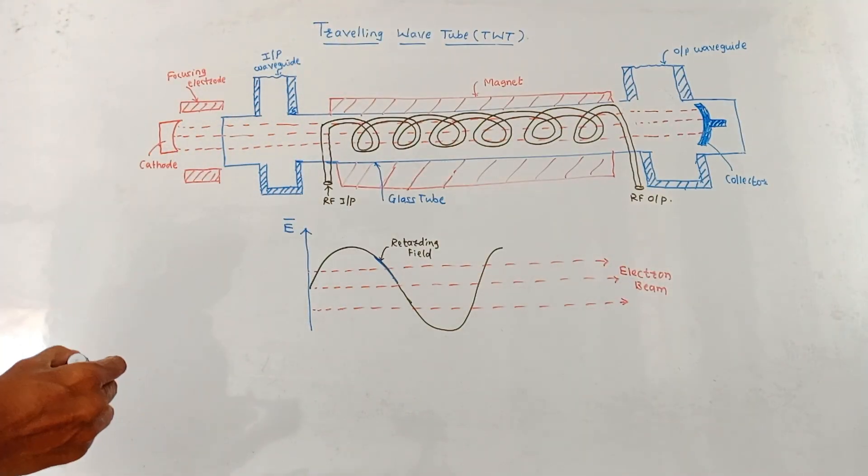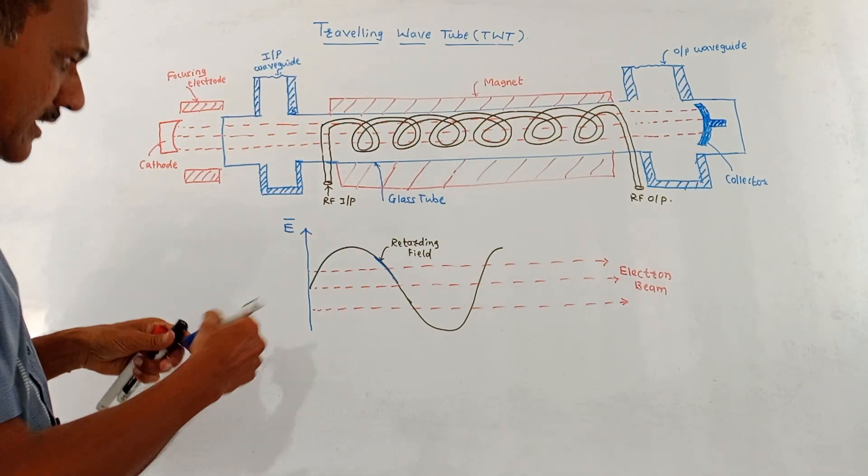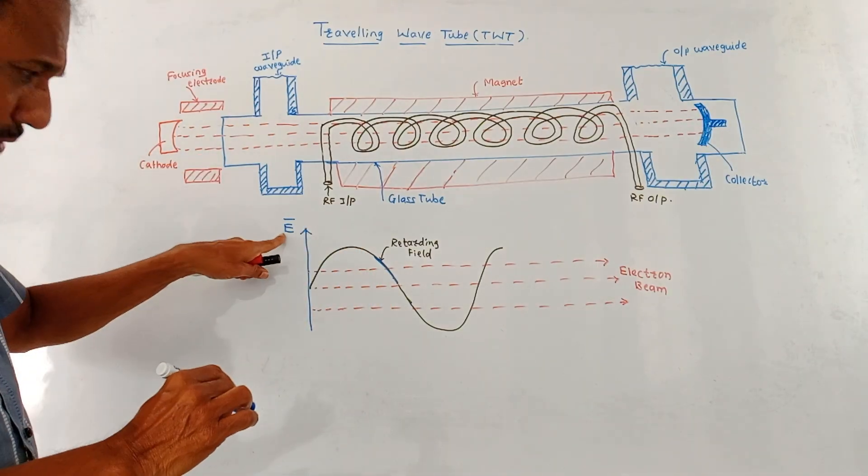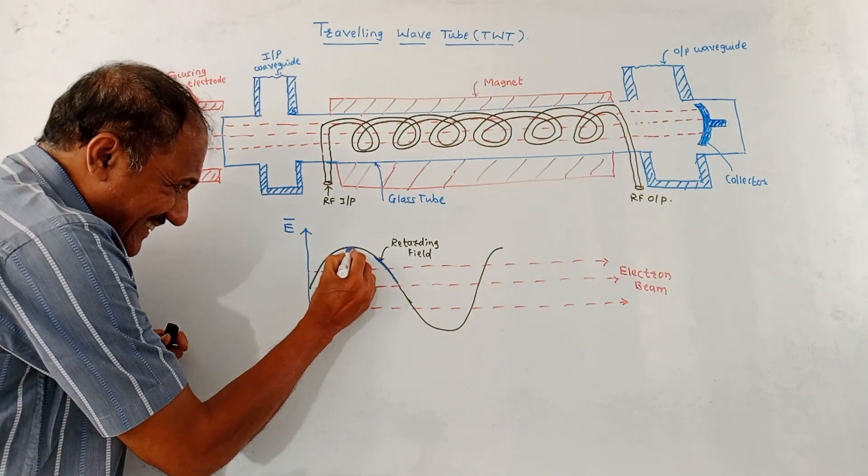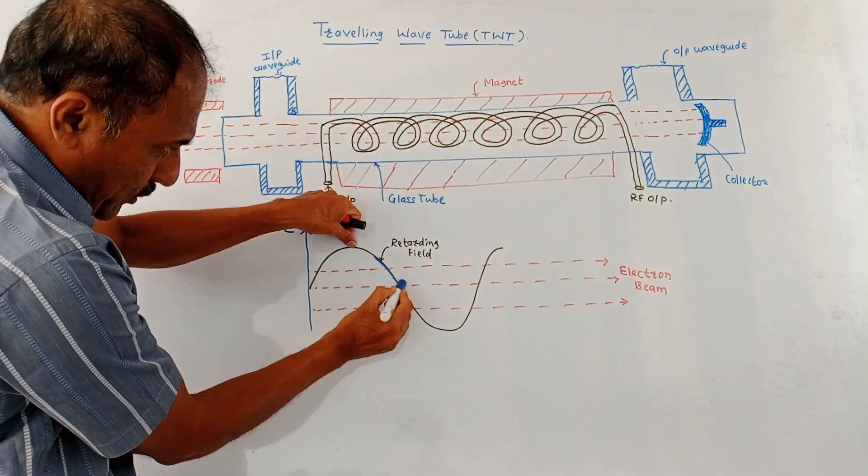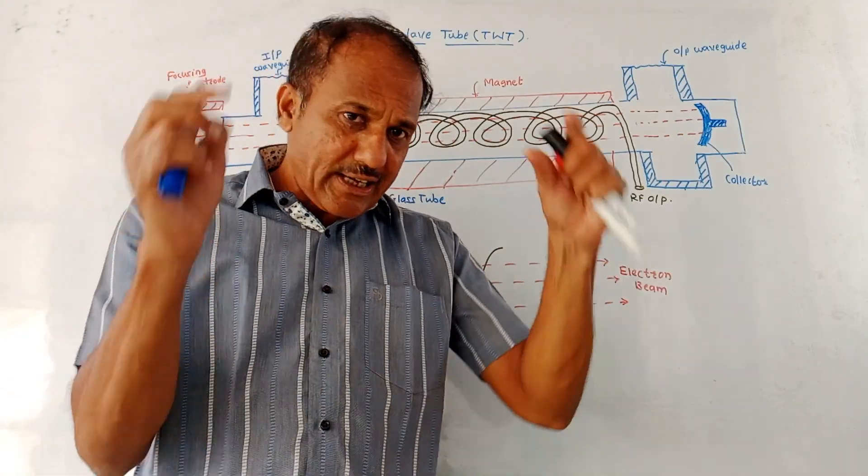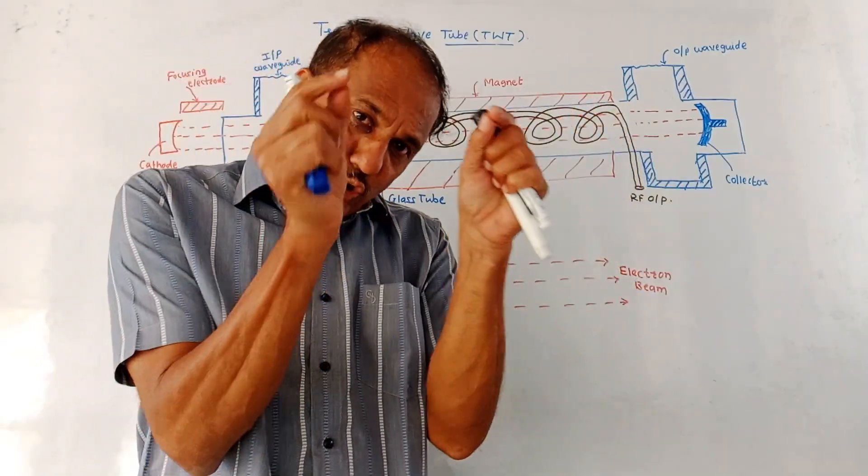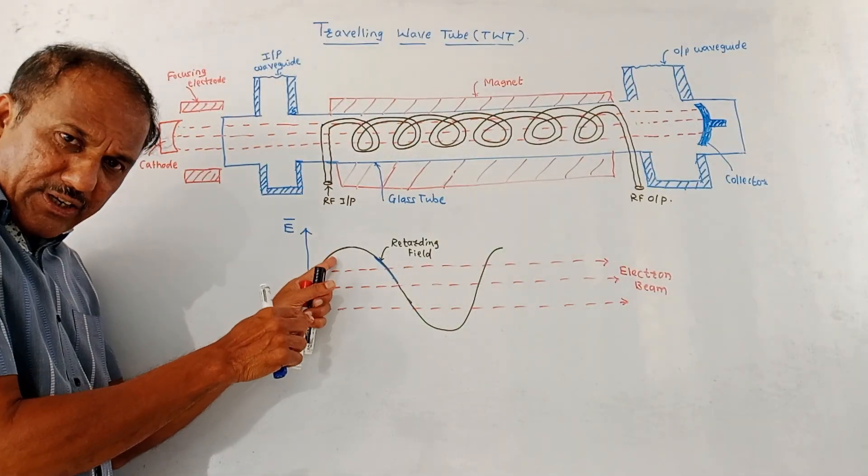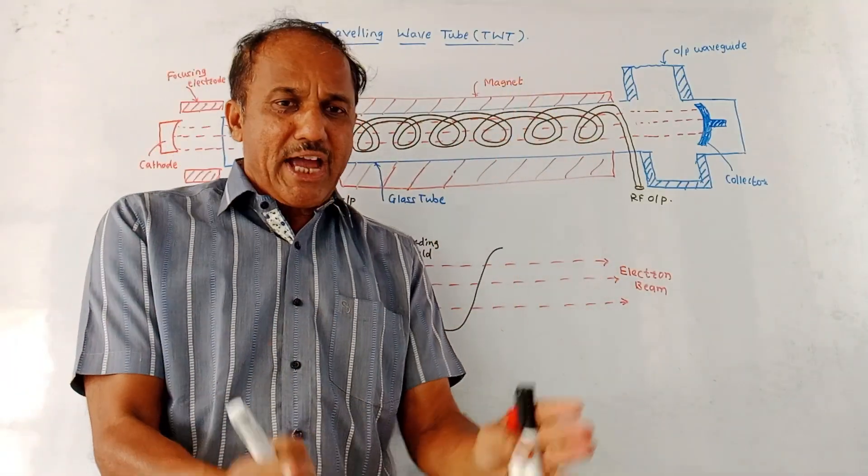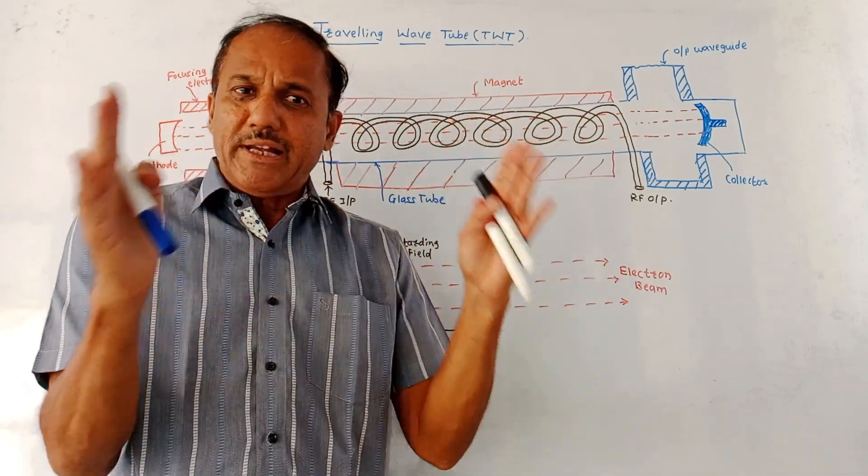Now how the working of this structure takes place. As we discussed, RF input signal is applied at one end of this helical structure. Consider this diagram. This shows the variation of electric field. So the variation is like this, it is following the sinusoidal path. This part indicates that the field is increasing from this point up to this point. This is a level of zero. So the field is reducing. Whenever some electrons are entering, whenever the field is reducing, those electrons get retarded. Whereas some electrons which enter, whenever the field is increasing, they get accelerated. Due to speed mismatch, there is a process of bunching. That means the bunches of electrons are formed.